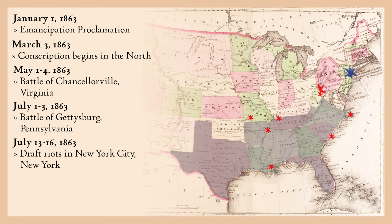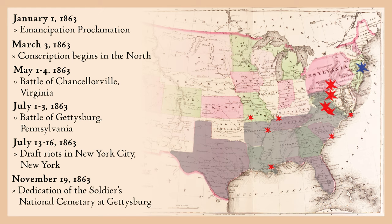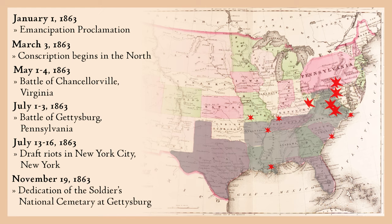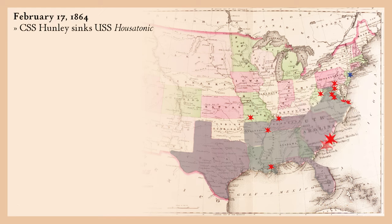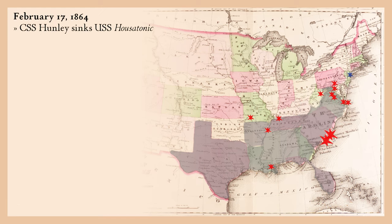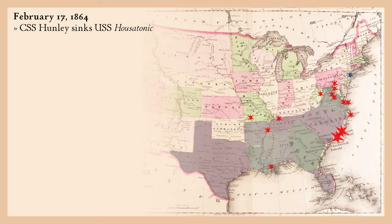The draft riots continue through July 16th. November 19, 1863 — dedication of Soldiers National Cemetery at Gettysburg; President Lincoln delivers the Gettysburg Address. February 17, 1864 — the first successful submarine attack of the Civil War. The CSS H.L. Hunley, a seven-man submersible craft, attacked the USS Housatonic outside Charleston, South Carolina. Struck by the torpedo, the Housatonic broke apart and sank. The Hunley was also lost and never heard from again until discovered in 1995.